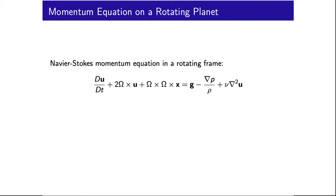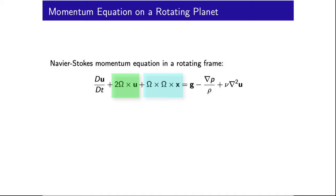So at this stage, we have just transformed the Navier-Stokes momentum equation into a rotating frame of reference, introducing these Coriolis and centripetal terms, and then rephrased this equation for geophysical applications, giving us the Navier-Stokes equation for flow on a rotating planet.